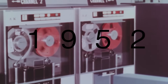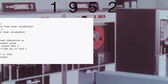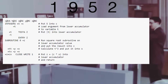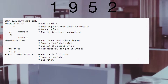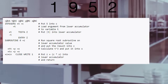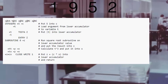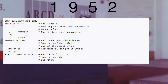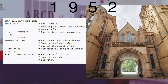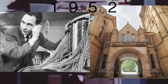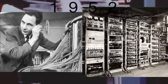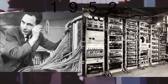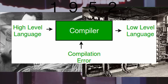1952 comes around and we see Autocode. Autocode wasn't actually a singular programming language, but a term used to describe a family of early computer programming languages. The first of which was developed at the University of Manchester by Alec Glenny for the Manchester Mark I. It is also believed to be the first programming language to run through a compiler.